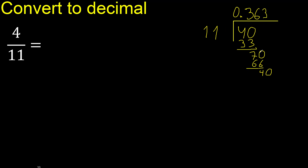11 multiplied by 3. Subtract, then complete — bring down 70. Multiply by 6: 66.